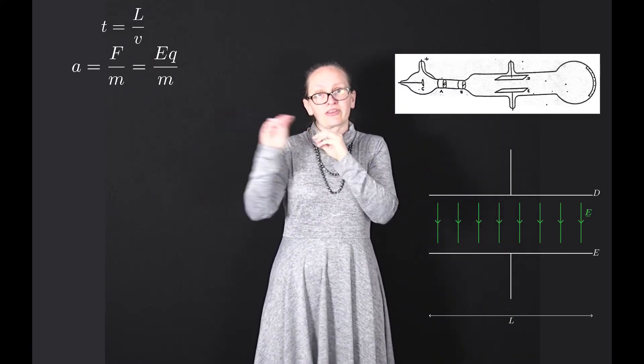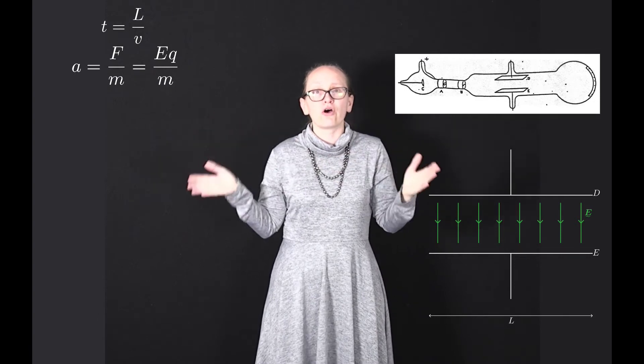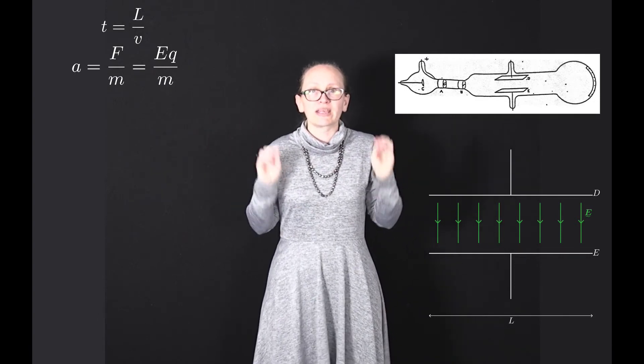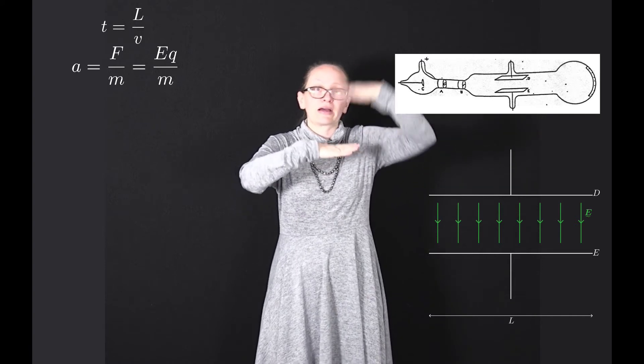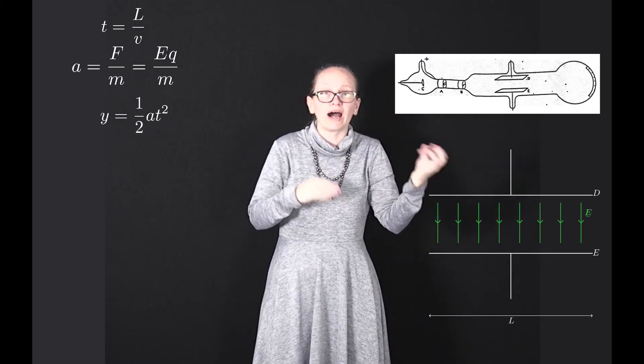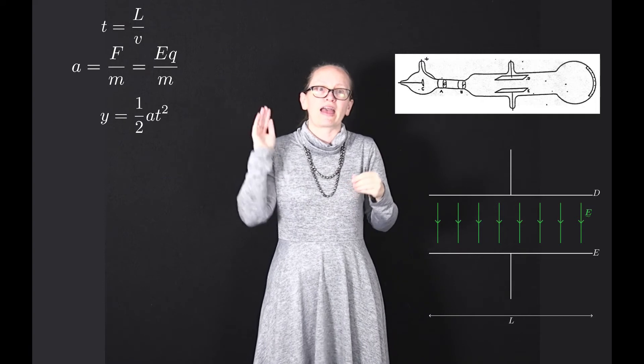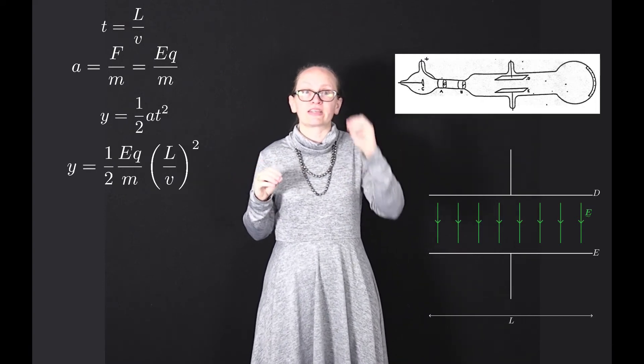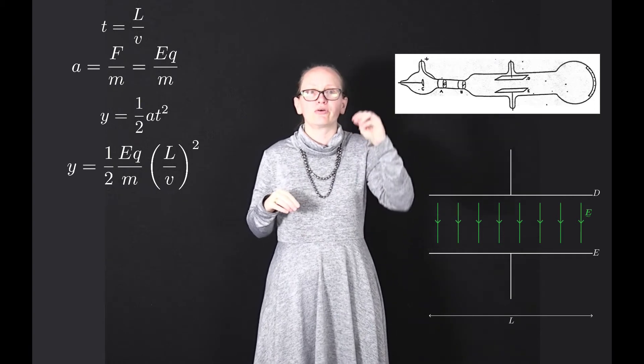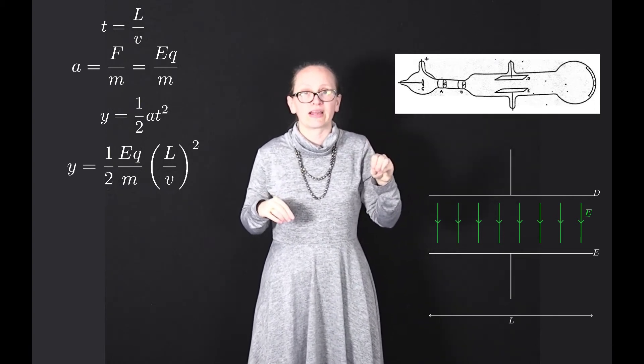Initially, these cathode rays or electrons had no vertical velocity. We can use our kinematic equations to write that the amount of deflection, which we'll call y, equals one-half a t squared. Using what we've just written, this equals one-half Eq over m times L squared over v squared.